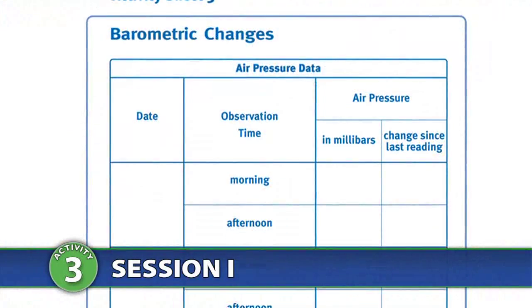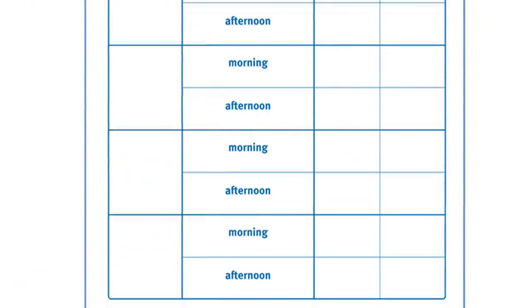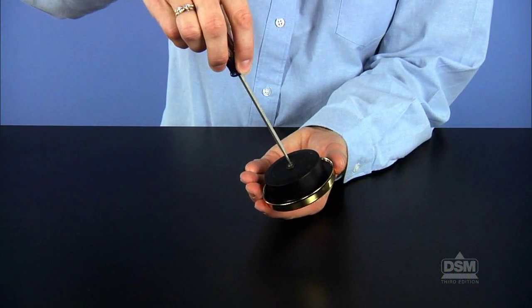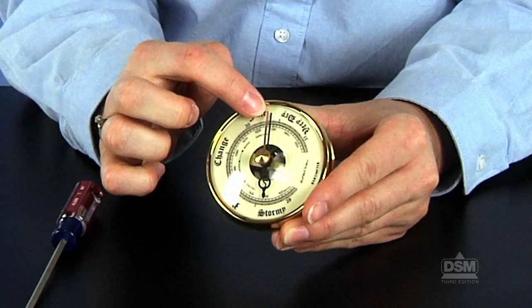To prepare for Session 1, make four copies of Activity Sheet 3 for each student. Obtain a current atmospheric pressure reading from a local television or radio weather broadcast. Calibrate the barometer by turning the little screw in the rear plate of the barometer until the needle points to the current atmospheric pressure.